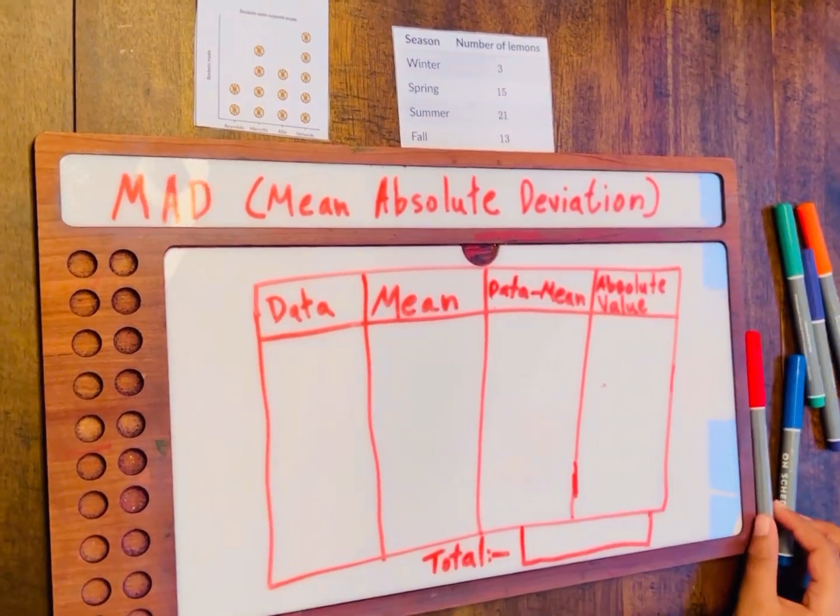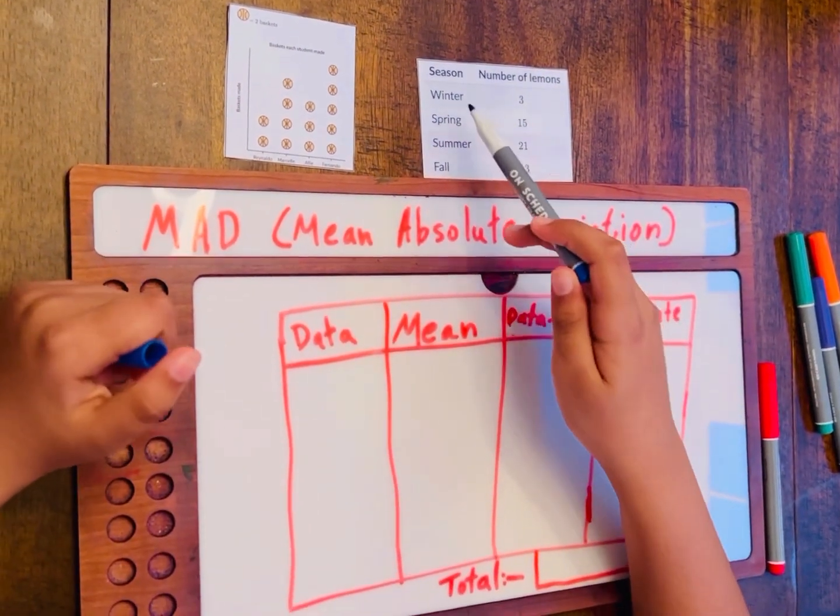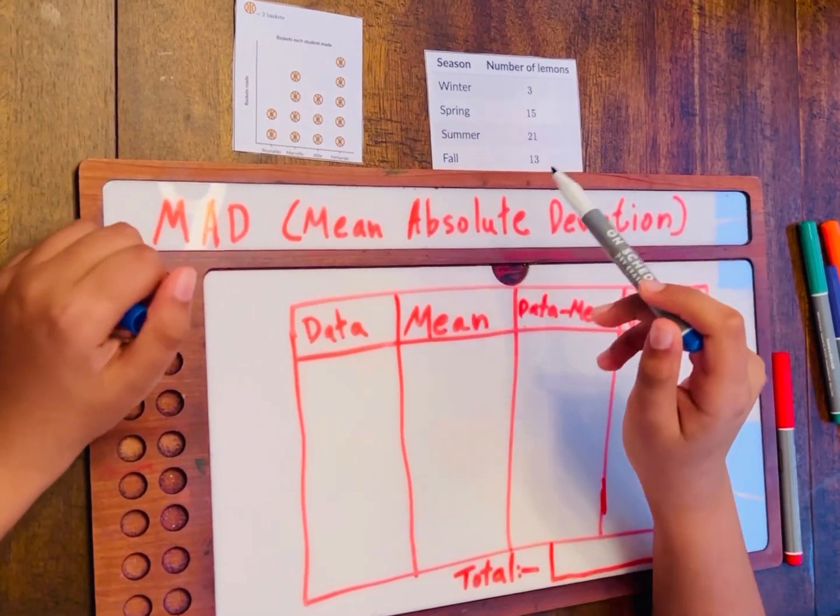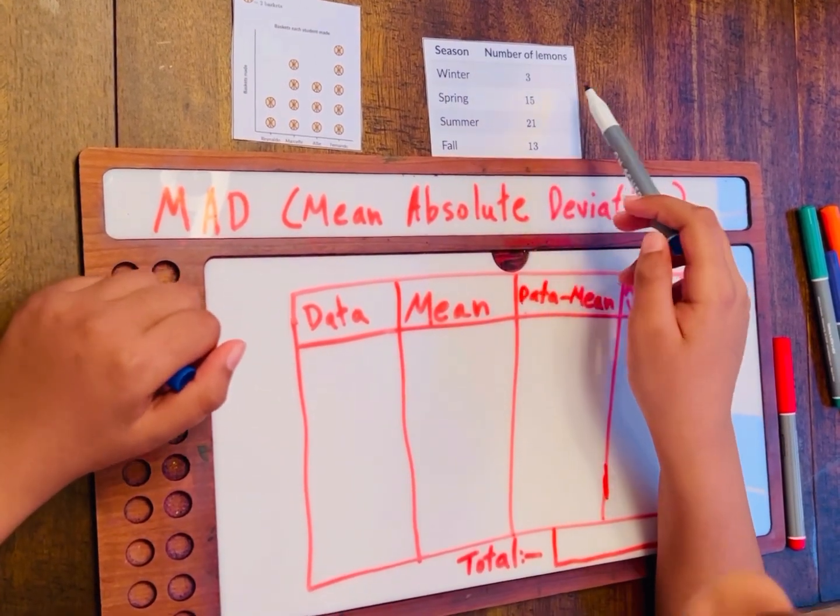First, let's write down our data. So it says seasons: winter, spring, summer, fall. That is not what we're going to write down, because that is not the data set. This, the number of lemons, is the data set.